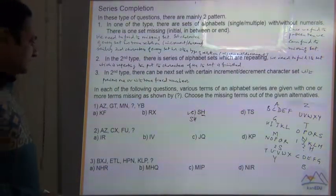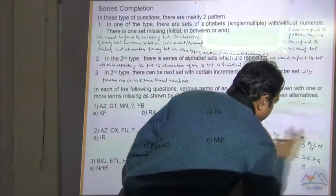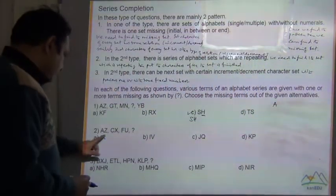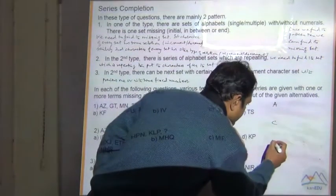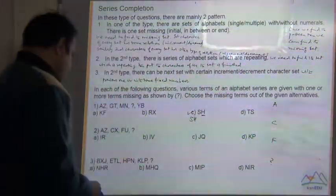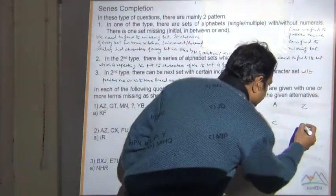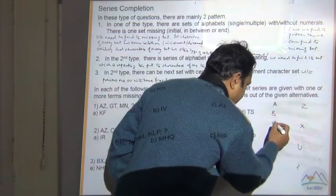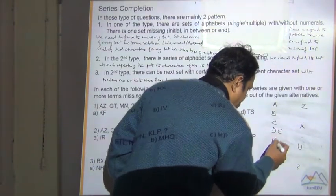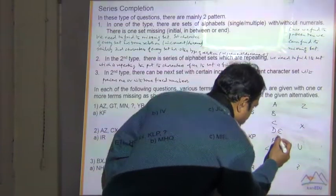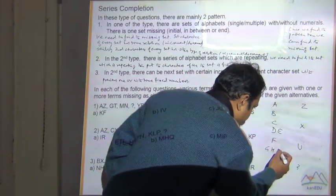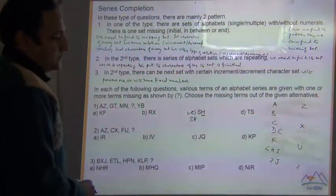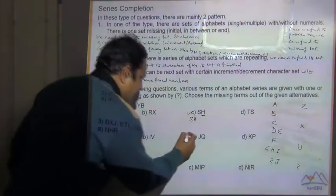Question 2: the series is A, Z, C, X. Let's examine the first characters: A, C, F, then question mark. From A to C is an increment of 2; from C to F is an increment of 3. So the next increment should be 4: F, G, H, I, J — giving J as the first character of the missing set.